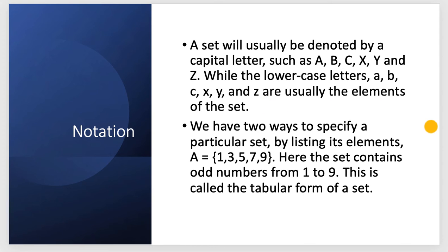Now we have two ways of specifying a particular set. By listing its elements, such as the set A = {1, 3, 5, 7, 9}. Here the set contains odd numbers from 1 to 9. This is called the tabular form of a set.